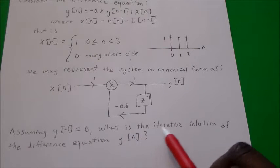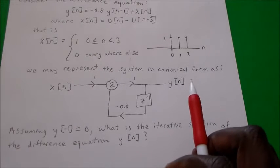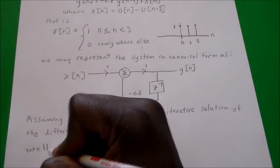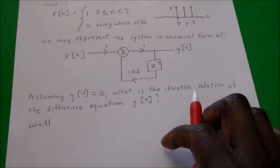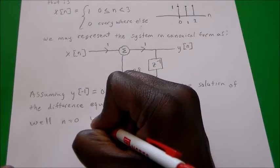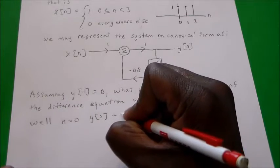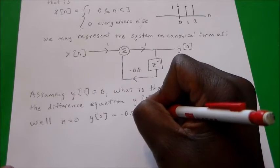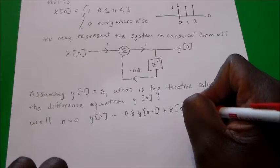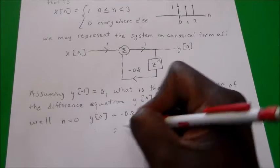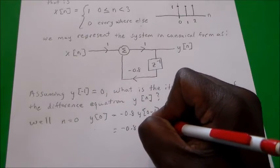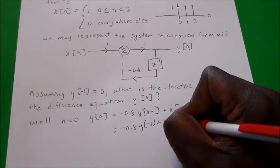In this problem, assume that y(-1) = 0 — that is, when n = -1, the system outputs 0. So now the question is: what is the iterative solution for this difference equation? We need to consider the system at different values of n. Starting with n = 0: y(0) = -0.8 times y(0-1) plus x(0), so y(0) = -0.8 times y(-1) plus x(0).